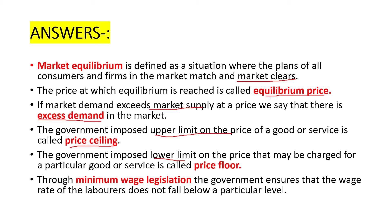Through which legislation does the government ensure that the wage rate of the labourers does not fall below a particular level? It is through minimum wage legislation that the government ensures that the wage rate of the labourers does not fall below a particular level. This is about the fifth chapter.